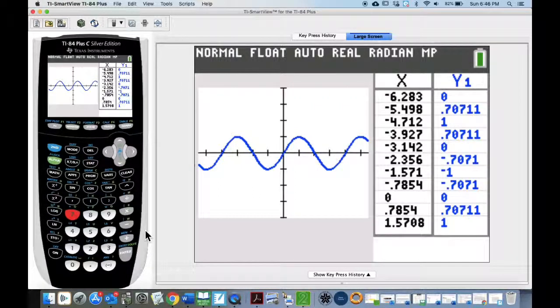And if we look at our table, our table is also set up. And it is counting in terms of pi over 4. So here's pi, and then that's pi over 2, and there's pi over 4.